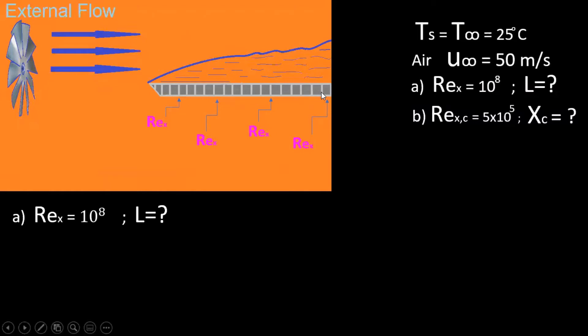Along the length of the plate, every single length has its own Reynolds number. So at this location we would have some kind of Reynolds number, at this location another one, here another one. Now here at the end at length L we would have another particular Reynolds number, and for us this is given 10 to the 8.